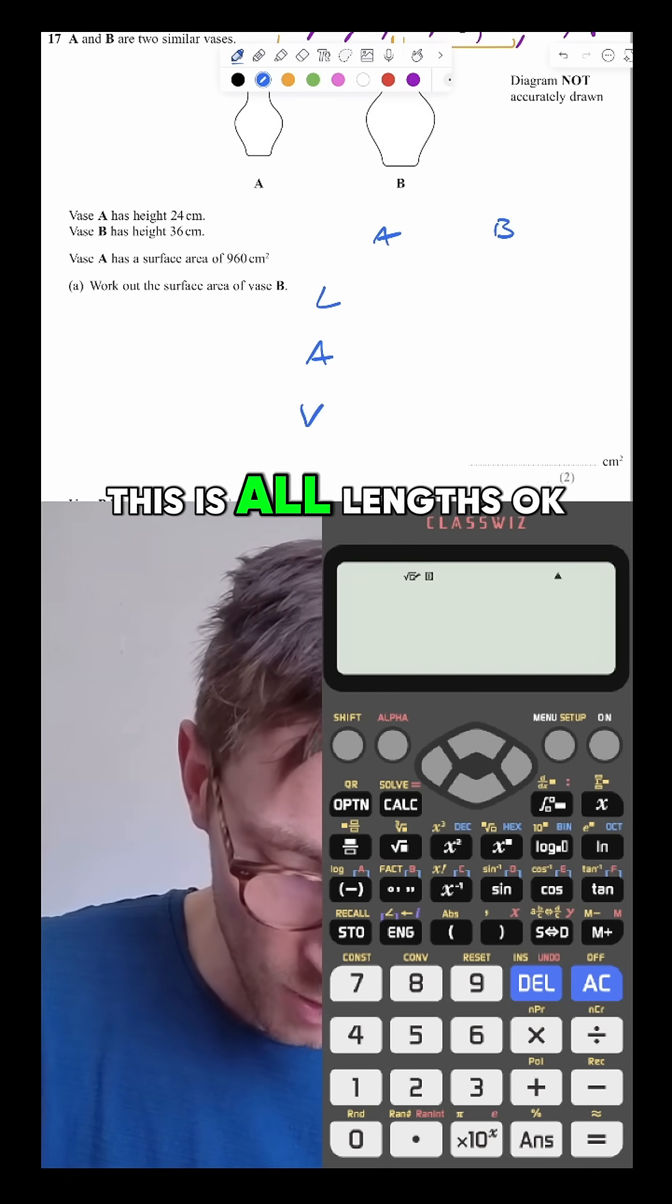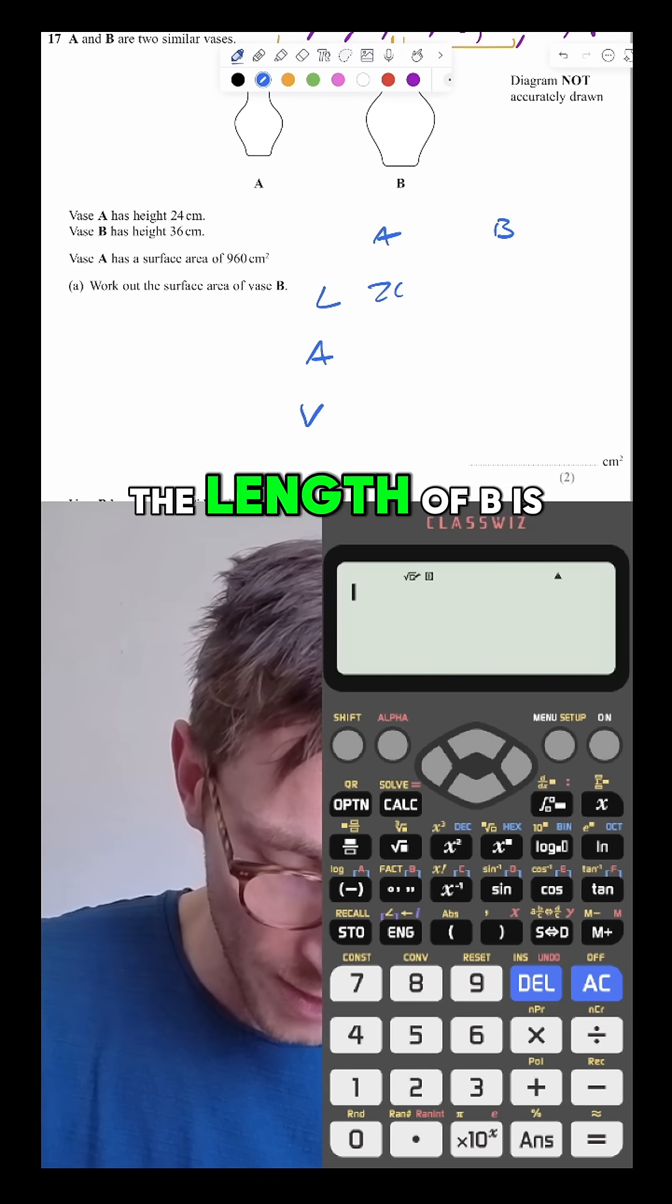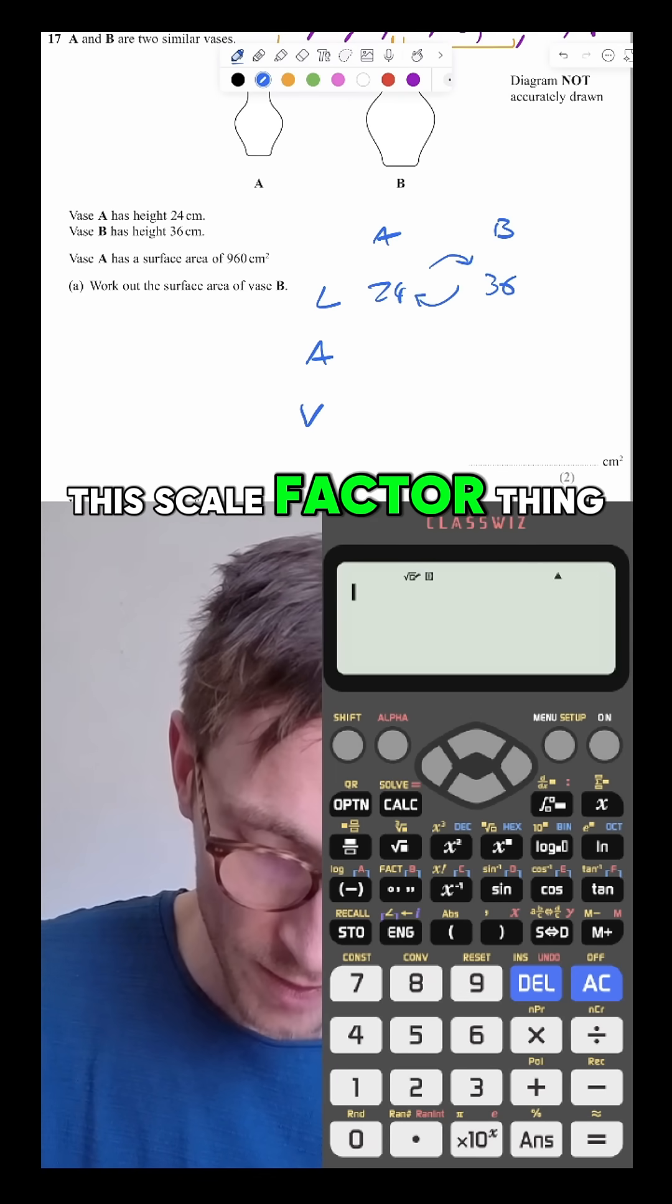They tell you the height. This is all lengths. So they told you the length of A is 24, the length of B is 36, and then you've got this scale factor thing.